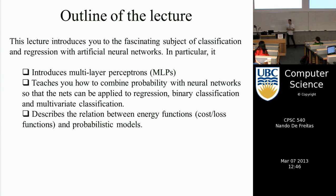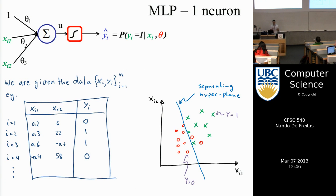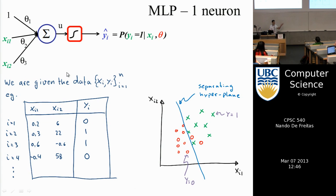Let's go back to logistic regression, which is a neural network with one neuron. The basic unit is the McCulloch-Pitts model of a neuron. In this case there are two inputs x1 and x2, and one output — the prediction y-hat. For binary classification, that output is the probability of y being equal to one, ensured by the sigmoid function, which squashes the signal to be between zero and one.